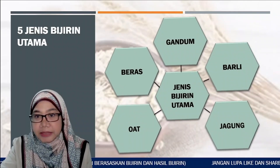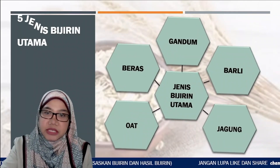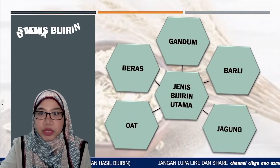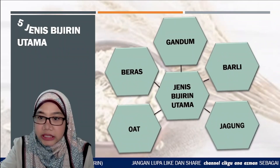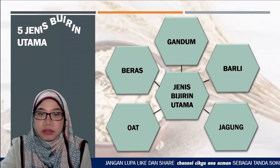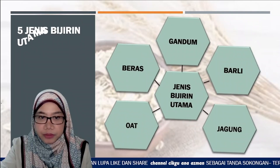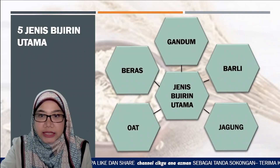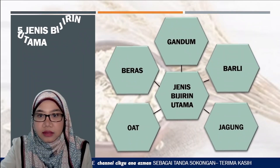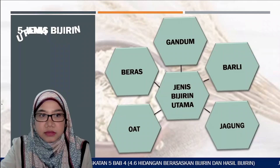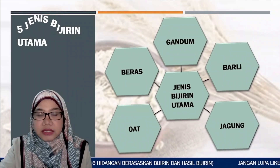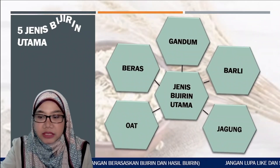Terdapat 5 jenis bijirin utama dalam kehidupan seharian kita, iaitu gandum, barli, jagung, beras dan oat. Kita akan lihat kelima-lima jenis bijirin utama ini secara terperinci.